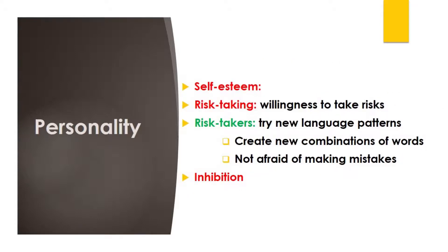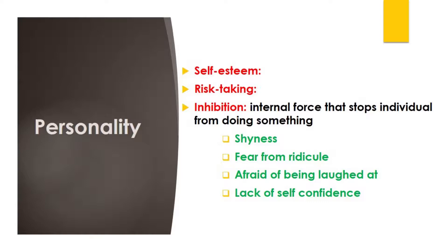Risk-taking is another trait of personality. It refers to the willingness to take risks and is closely related to reflective and impulsive learning styles. Learners who are risk-takers tend to communicate in spite of errors, even if they are not sure what they are saying is correct. They venture into experimenting with language by using their creativity to create and test new language forms and structures. However, overuse of risk-taking may lead to error fossilization. Inhibition is another characteristic of personality; it refers to the internal force that stops an individual from doing something — a defense mechanism that aims to protect one's ego. For instance, some learners may refuse to engage in oral communication activities because they are shy or afraid of being ridiculed by others.